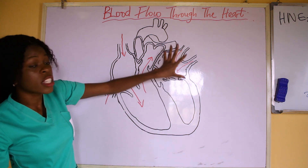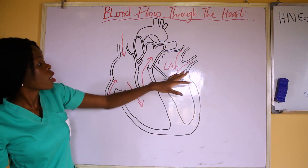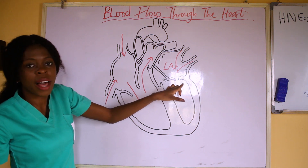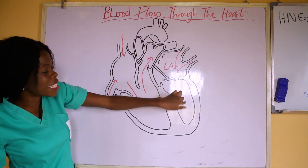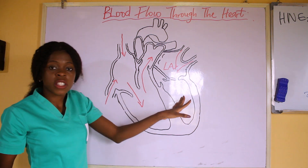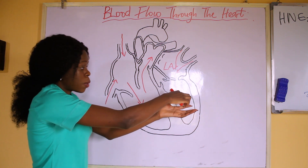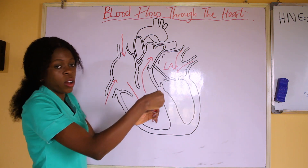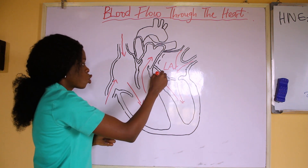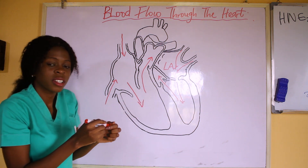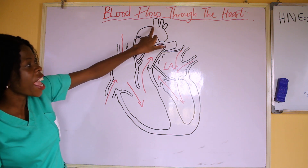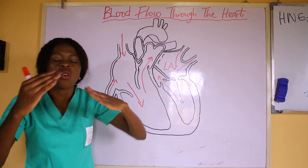When the left atrium is filled up, the left atrioventricular valve opens and the blood enters the left ventricle. When the left ventricle is filled, contraction takes place again, and the blood passes through the aortic valve. From the aortic valve, it goes to the aorta, and from the aorta to all parts of the body.